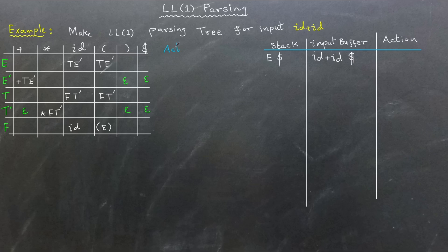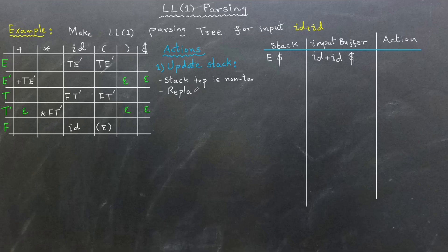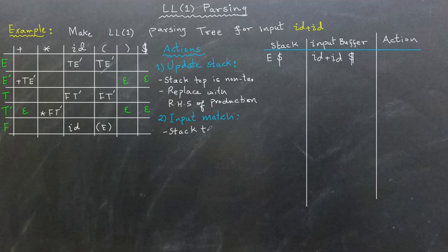As we parse, we will perform one of four possible actions. Action 1 — Update the Stack: this happens when the symbol at the top of the stack is a non-terminal. We replace that non-terminal with the right-hand side of the corresponding production rule. Action 2 — Input Match: when the top of the stack is a terminal and it matches the first symbol in the input buffer, we remove both symbols from the stack and the input buffer.